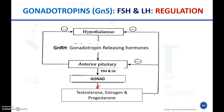FSH and LH stimulate the secretion of different hormones like testosterone, estrogen, and progesterone. If there is any increased secretion of testosterone, estrogen, or progesterone in the body, it will negatively inhibit the anterior pituitary and stop the release of FSH and LH. Excess of these hormones also negatively inhibits the hypothalamus, causing it to inhibit GnRH release, thereby preventing FSH and LH release from the anterior pituitary. This is the common mechanism of regulation of FSH and LH.